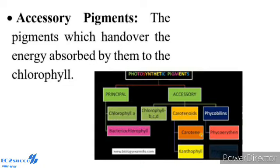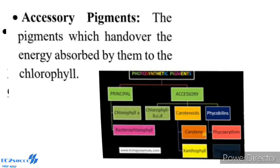Accessory Pigment: The pigments which hand over the energy absorbed by them to chlorophyll. The photosynthetic pigments other than chlorophyll A are called accessory pigments. Examples include chlorophyll B, carotenoid, xanthophyll, etc.